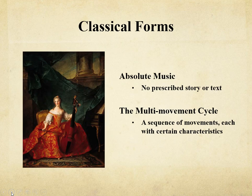Every musical work has a form. Absolute music is music with no pictorial or literary association. In absolute music, form is essential because there is no prescribed story or text to hold the music together. A multi-movement cycle is a three or four movement structure found in various genres, such as the classical symphony, sonata, string quartet, or concerto. Each movement of a cycle is in a prescribed form with a specific tempo and certain characteristics.